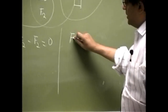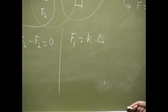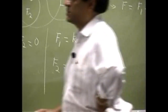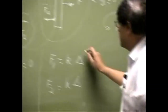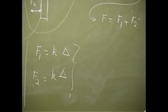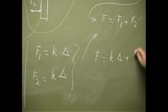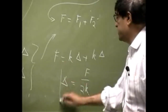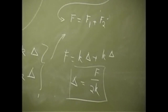Using the spring force-elongation relationships: F1 equals k times delta, and F2 equals k times delta, where delta is the elongation of each spring. Substituting back: F equals k·delta plus k·delta equals 2k·delta. Therefore, delta equals F divided by 2k. This is the elongation of two springs in parallel.